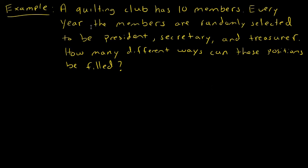Suppose you have a quilting club that has 10 members. Every year the members are randomly selected to be president, secretary, and treasurer. How many different ways can these positions be filled? Because one person cannot serve both as president and secretary, same person can't be more than one position. That is selection without replacement.